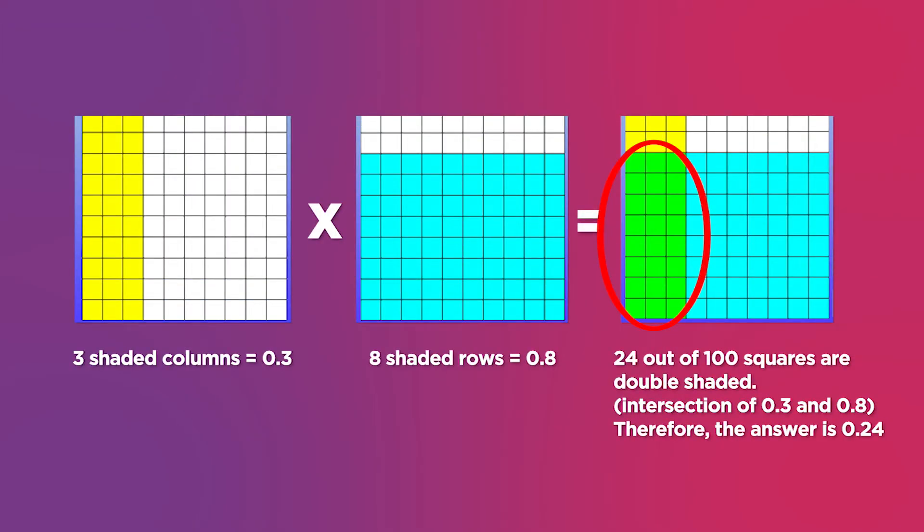3 shaded columns equals 0.3. 8 shaded rows equals 0.8. 24 out of 100 squares are double-shaded, therefore the answer is 0.24.